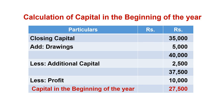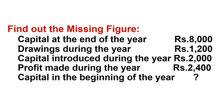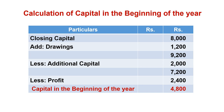We calculated the opening capital with the help of the Statement of Profit. Third problem: Find the missing figure — this is a little different and common in University Exams. In the Statement of Profit format, closing capital is 8,000, add drawings 1,200 — gives 9,200, less additional capital 2,000 — gives 7,200. Less profit 2,400 — opening capital at beginning of the year is 4,800.